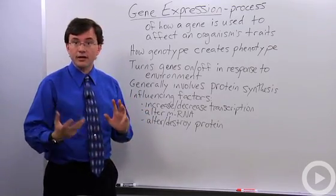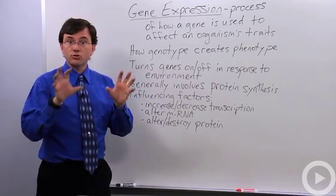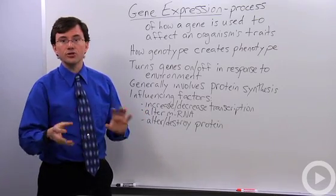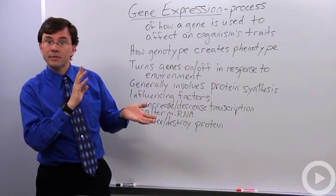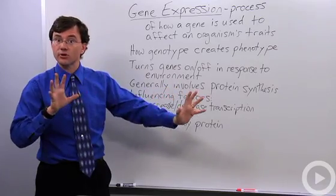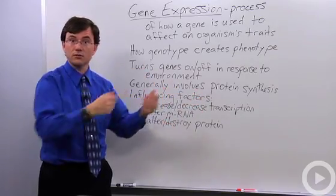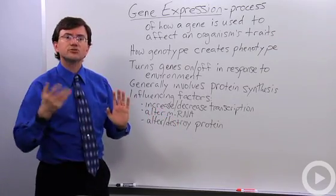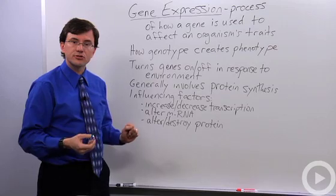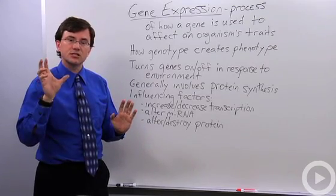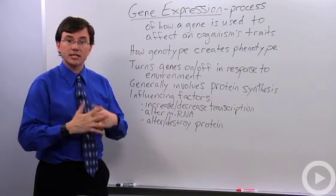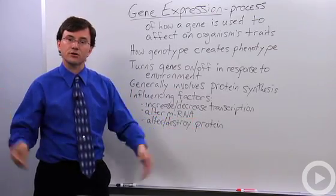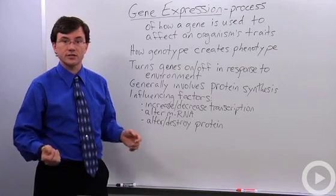Another strategy is altering the mRNA being made during transcription. You can cut out parts, which creates differences in how that gene is expressed, or you can make that messenger RNA last for a shorter or longer period of time within the cell. The last strategy is altering or destroying the protein — this is used less than the other two methods, but it can influence gene expression by destroying the protein faster or allowing it to last longer in the cell.